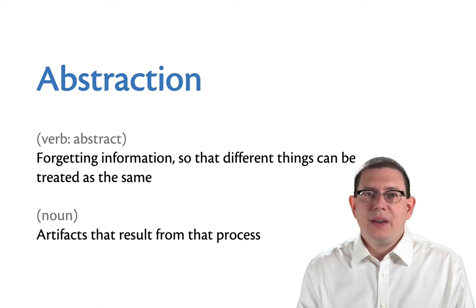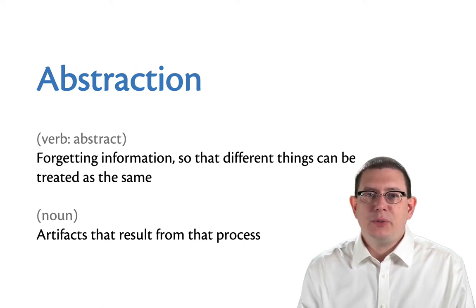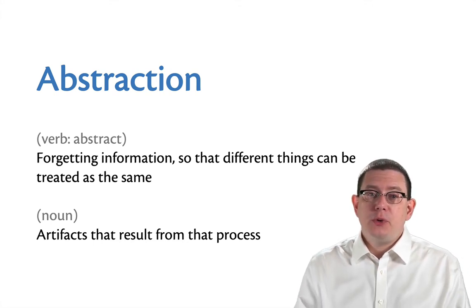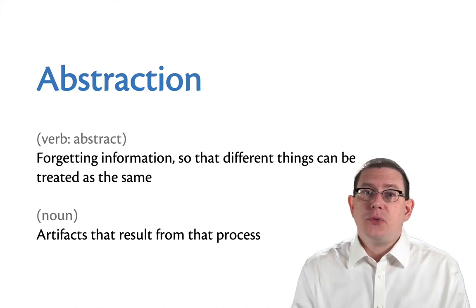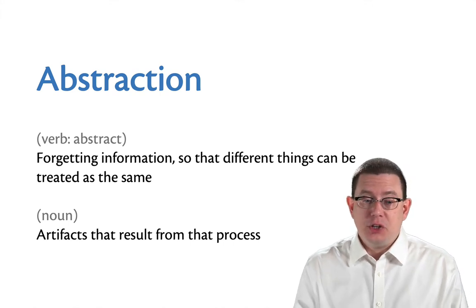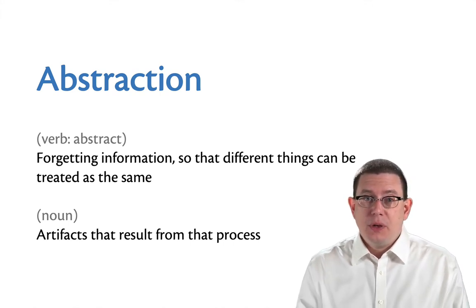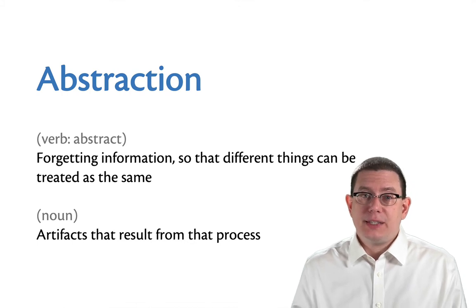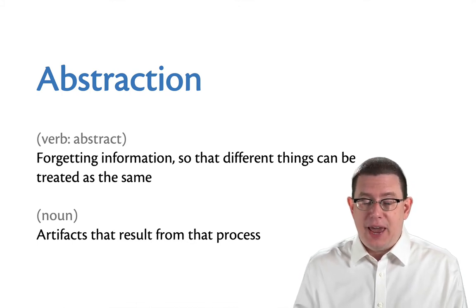It's been said that computer science is the science of abstraction, or perhaps efficient abstractions. What is an abstraction? Well, as a verb, to abstract means to forget information, with the purpose of being able to treat related things as being the same.